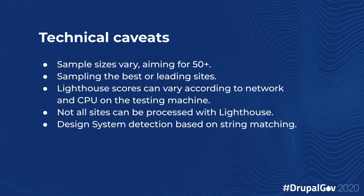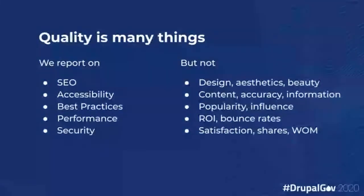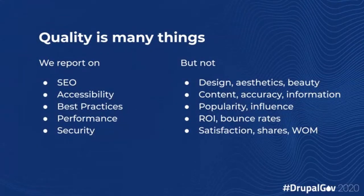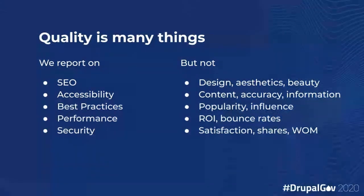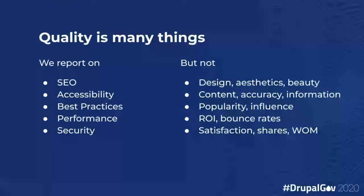Quality is many things. This presentation is basically presenting the sites and findings in terms of quality, but we're only measuring five aspects. Of course there are very many others, such as design, content, popularity, return on investment, and user satisfaction. These are all very important when you're building a site. We are only using what is easily measurable, what is objective, and what has value — and those are the five things our analysis is limited to.